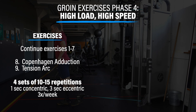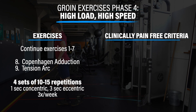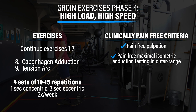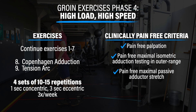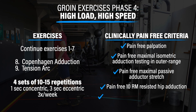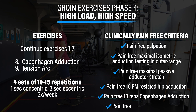In order to progress to on-field or on-court sport-specific training, the following criteria should be met: pain-free palpation, pain-free maximum isometric testing at an outer range, pain-free maximal passive adductor stretch, pain-free resisted hip adduction exercise at a 10-repetition maximum, pain-free Copenhagen adduction exercise at 10 repetitions, and a pain-free T-test at 100% self-reported intensity.